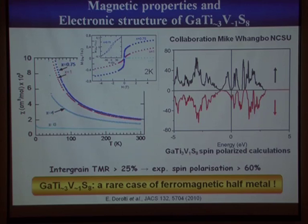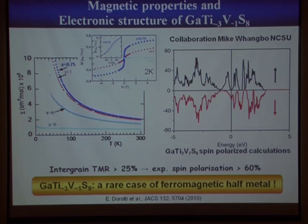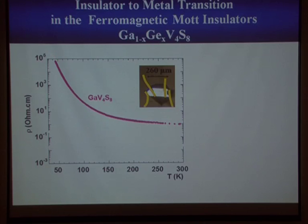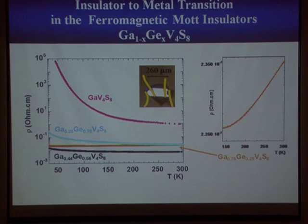More interestingly, doping on the gallium site avoids disorder effects. Replacing gallium by germanium adds up to one electron to the system. Pure GaV₄S₈ shows nice insulating behavior, and upon introducing germanium you induce an insulator-to-metal transition — losing orders of magnitude in resistivity — with metallic character at about 25% germanium doping. GaV₄S₈ is also a ferromagnetic Mott insulator at low temperature, and the germanium-doped metallic compound retains this ferromagnetic loop.